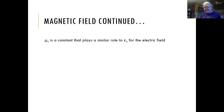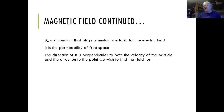Just like we had epsilon-naught when we talked about electric fields, we have its magnetic cousin: mu-naught. Mu-naught is called the permeability of free space — that's how easy it is for a magnetic field to move through whatever material, or in this case vacuum, that you're in. It's exactly analogous to epsilon-naught for electric fields. The direction of the field is perpendicular to the velocity direction and to the direction we're viewing it from.